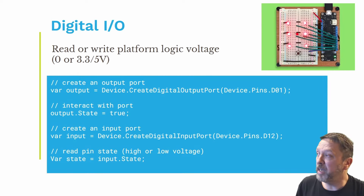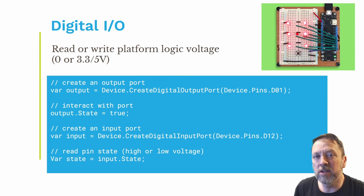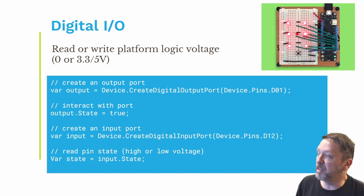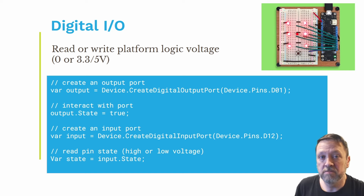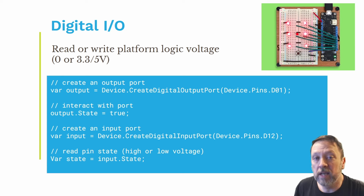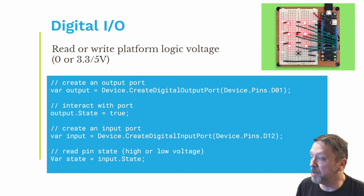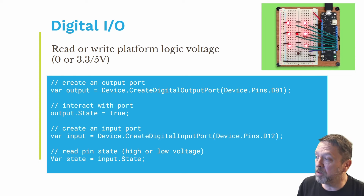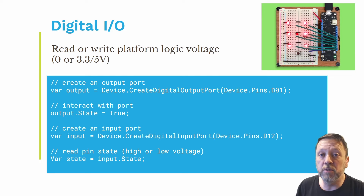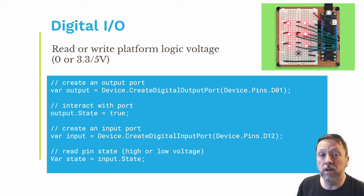For digital I/O, this is reading or writing platform voltage. Turning on something like an LED is a classic example. You would create the port, and then you just set its state — either true or false — and the voltage will go to whatever the logic level is on your platform. Same thing for reading: you create a digital input port on the pin, and then you read its input state, and it'll give you either true or false, whether or not it has voltage.